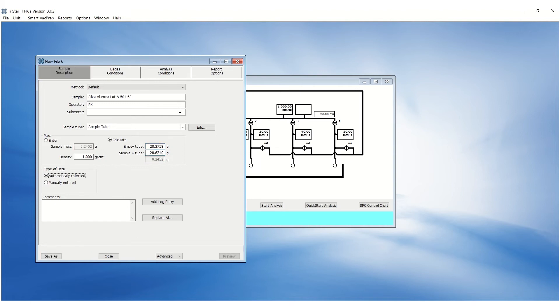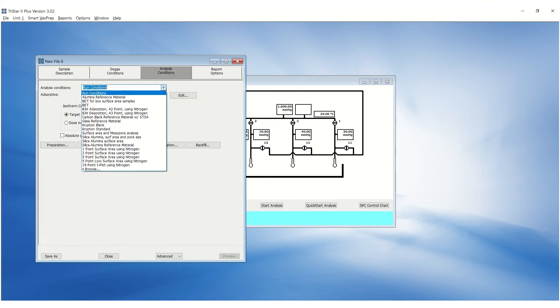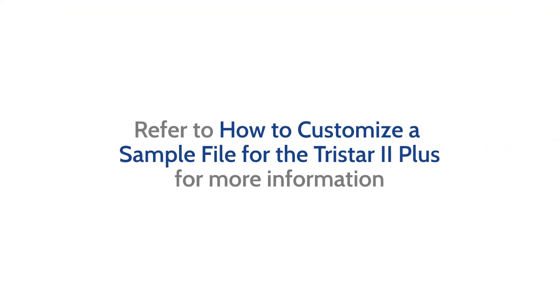Under Analysis Conditions, click on the drop-down menu and select Silica Alumina Reference Material. This will load pre-saved analysis conditions to collect a full adsorption and desorption isotherm. Please refer to How to Customize a Sample File on TriStar 2 Plus Video for more information.